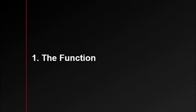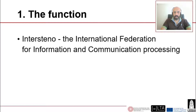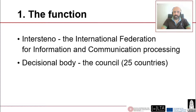Section one: the function. Intersteno is the international federation for information and communication processing. Its main decisional body is the council, composed of delegates from 25 countries from all corners of the planet. Though the official language is English and is more or less spoken and understood by everybody, there are delegates who find it hard to understand what is said in normal conditions.